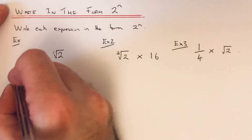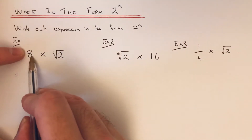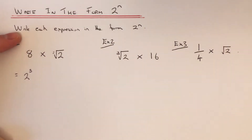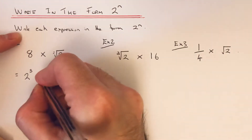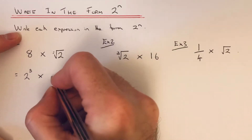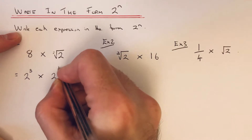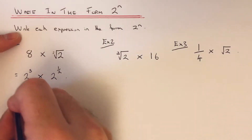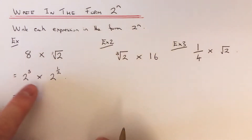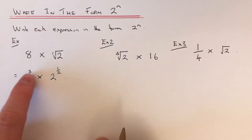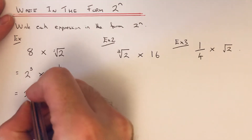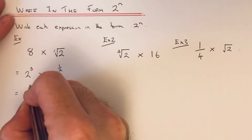So I've got to write it in the form 2 to the power of n. The first thing you can do is change the 8 to 2 cubed, because 2 cubed is 2 times 2 times 2. And then what we've got next is the square root of 2. Now the square root is the same as 2 to the power of a half. So we've changed our base numbers to 2, and our rule for multiplying powers is to add the powers at the top. So if we do 3 and a half, that will give us 2 to the power of 3 and a half.